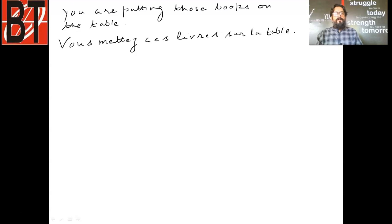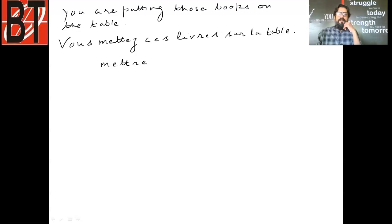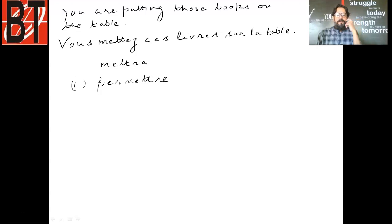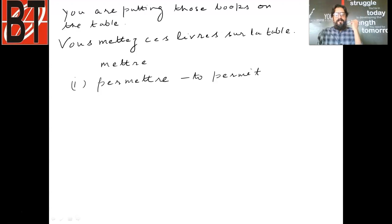Now, what are the other verbs that come in the family of mettre — that would take the same kind of conjugation? The first verb is 'permettre'. What is permettre? Permettre is to permit. It would take the same conjugation.